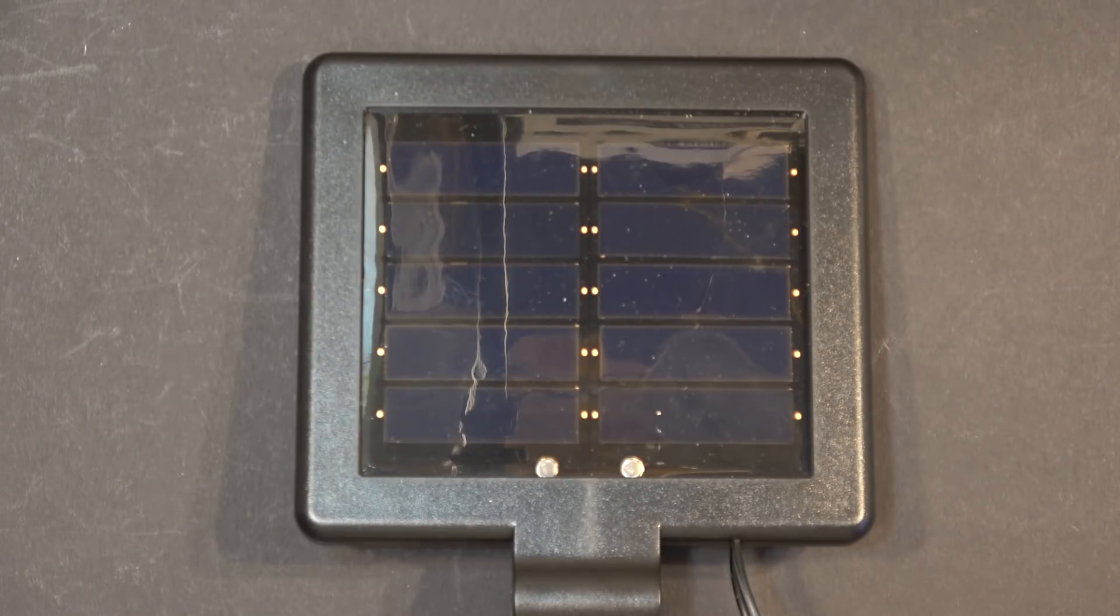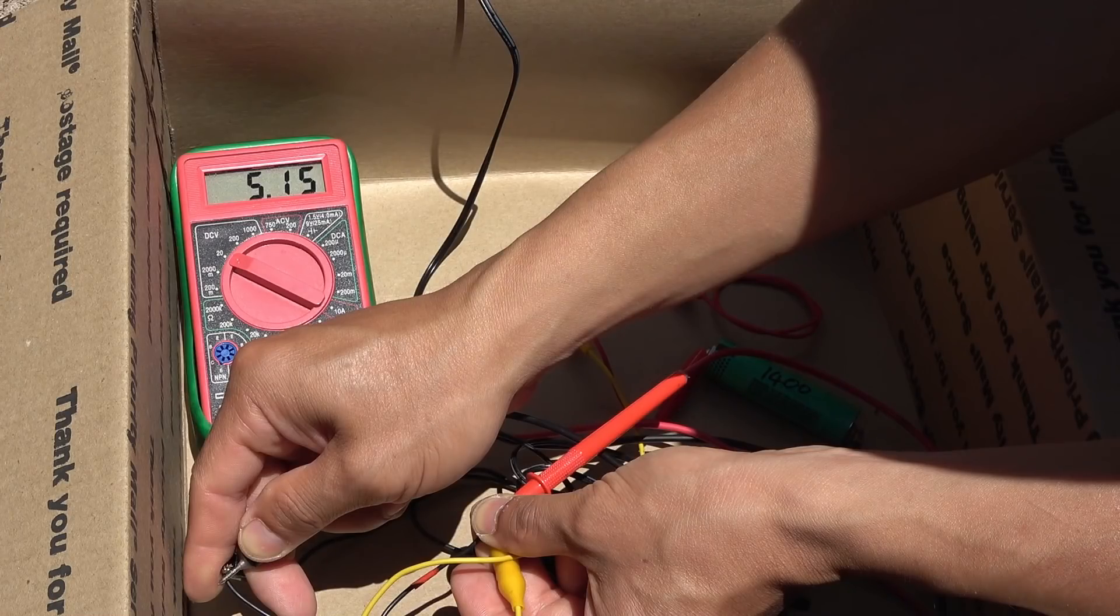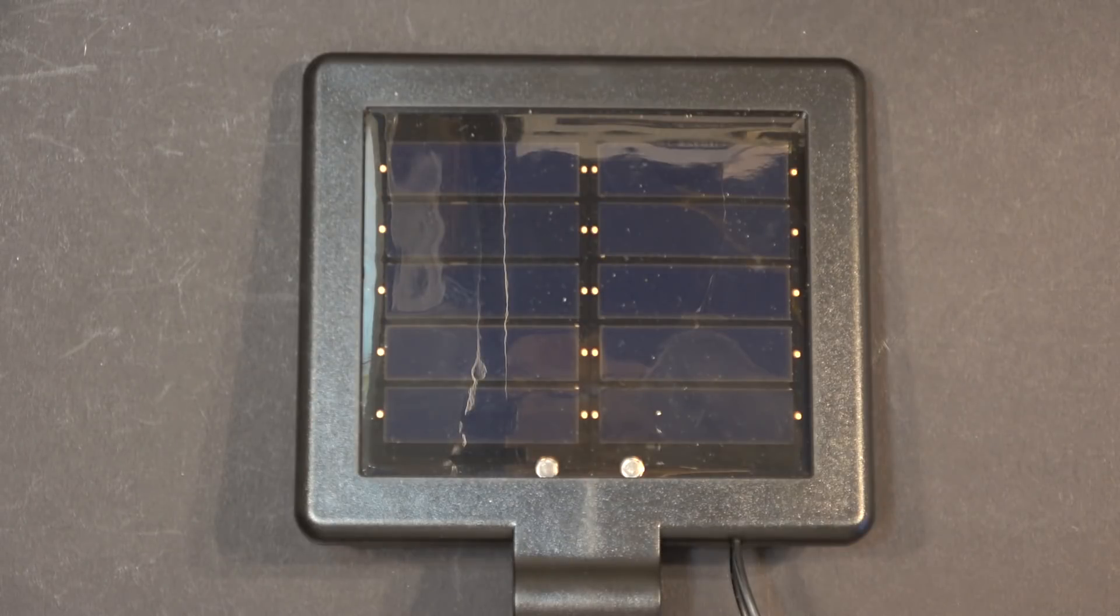When under load, this panel produces about 5.15 volts. In order to charge a lithium-ion battery pack, I need to reduce the load voltage down to 4.2 volts, and I'm going to do that by using a series of resistors and diode.